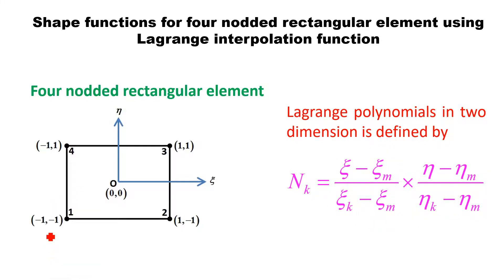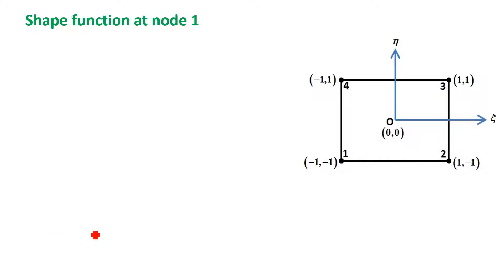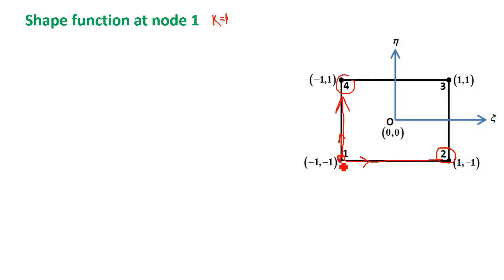To apply this polynomial, we will go through the four nodes one by one. For node number 1, k equals 1. Look at the two edges of the rectangle connecting at node number 1. On the horizontal edge (xi direction), the remaining node is node number 2. On the vertical edge (eta direction), the remaining node is node number 4. So m equals 2 for the xi ratio and m equals 4 for the eta ratio.